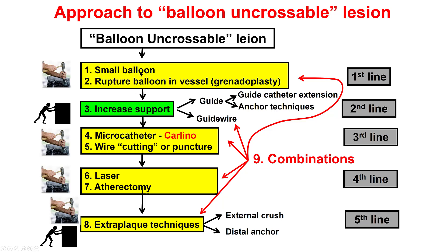This is the algorithm. The next step is to rupture the balloon. The third step is to increase support with a guide extension or other means, use a different microcatheter or the Carlino technique, use the wire cutting technique, use laser atherectomy, or extraplaque techniques.